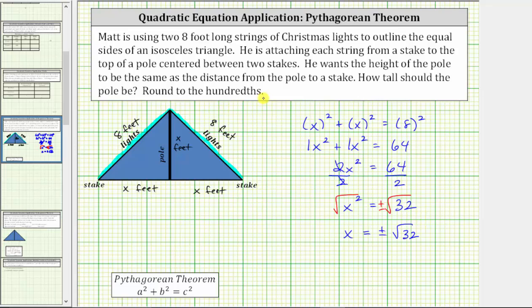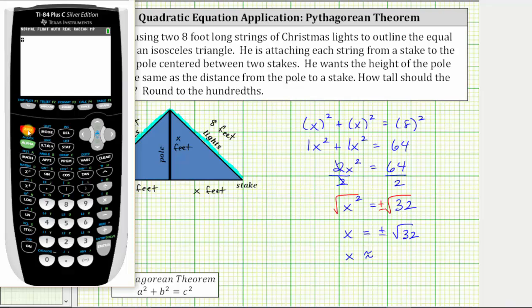But we are told to round to the hundredths place value, so now we will go to the calculator. We enter second x squared for the square root, enter 32, press enter.